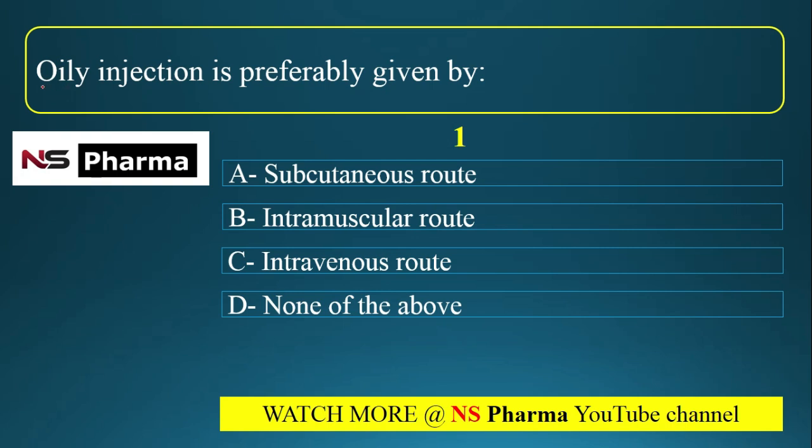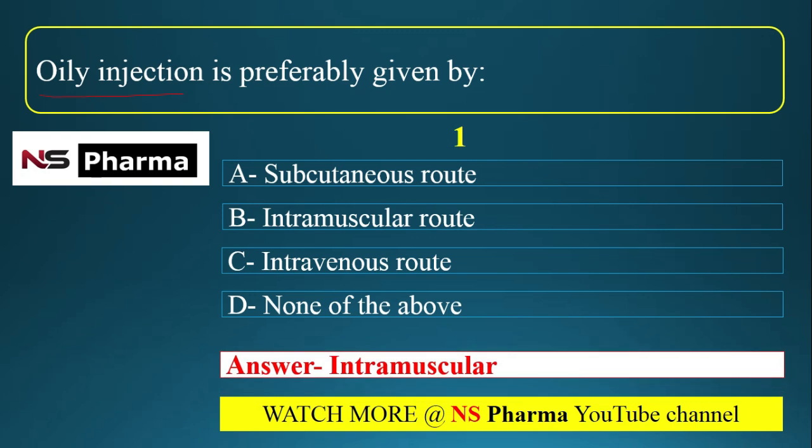In the question, it's mentioned oily injection. The correct answer for this question is option B, that is intramuscular route. Intramuscular route is the preferred route of administration of oily injection.